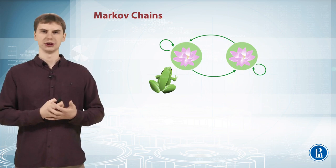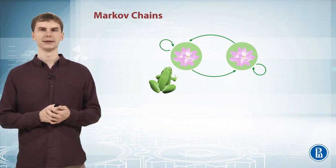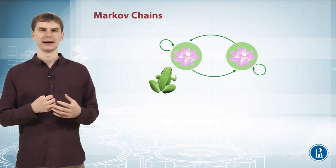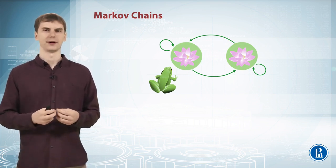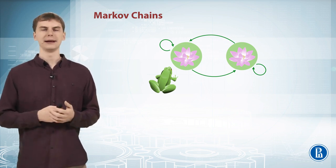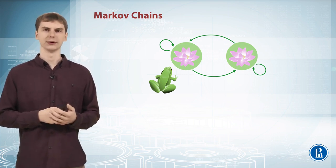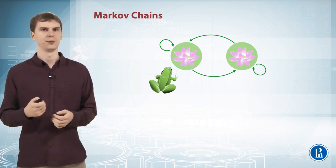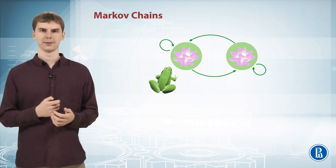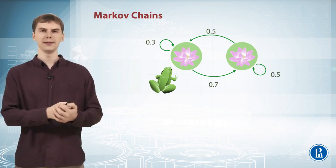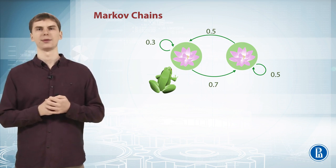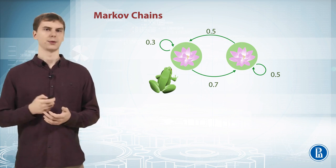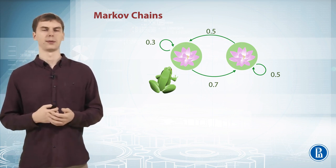Imagine a frog which sits on a water lily. This frog has discrete time, so at each time step — like each second — it makes a decision whether to stay on its current lily or to jump to the other one. Its decisions are predefined in a probabilistic way. So if it's on the left water lily, it will stay there with probability 0.3 and will move with probability 0.7. And if it's on the right one, it will stay or move with probability 0.5.